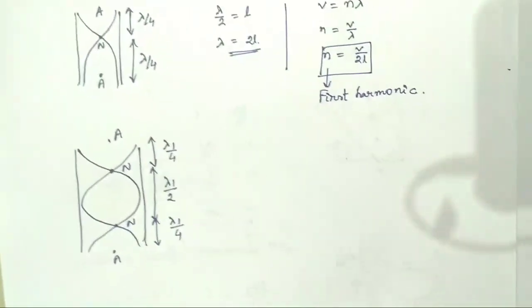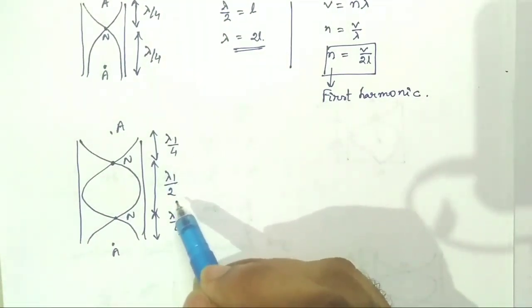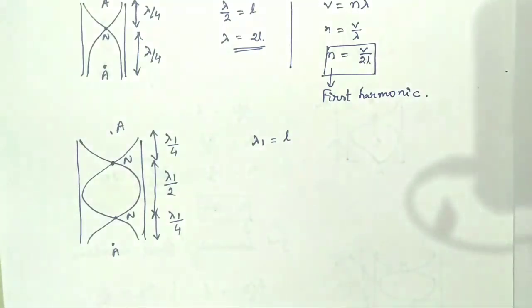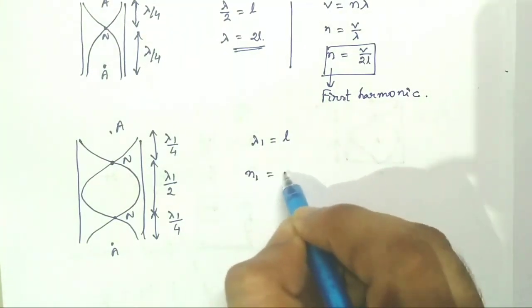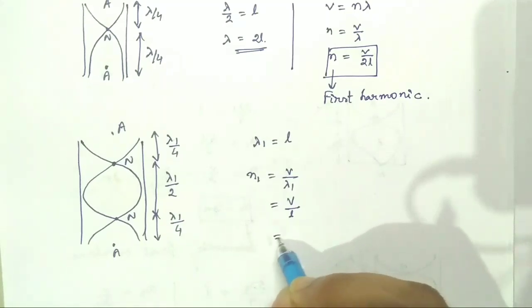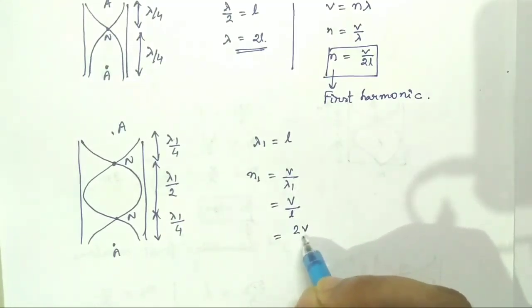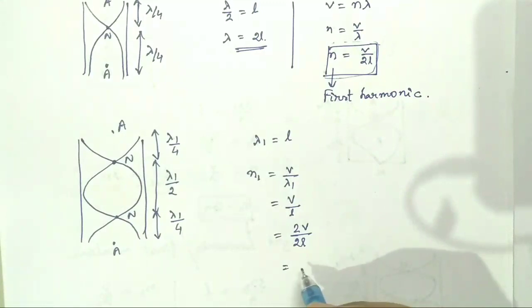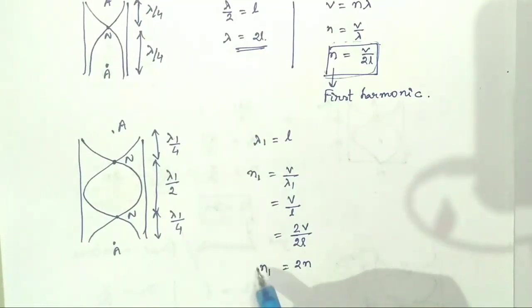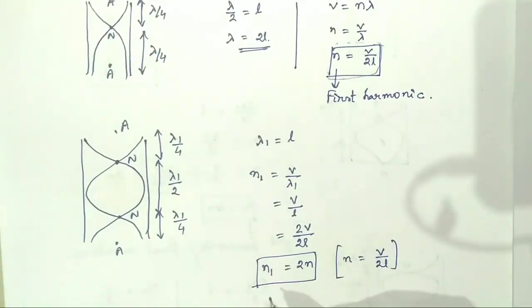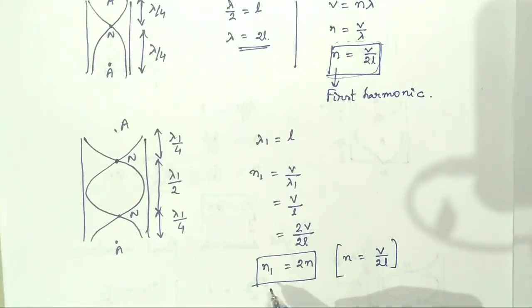For the second mode, the total distance is lambda 1 by 4 plus lambda 1 by 2 plus lambda 1 by 4, that is lambda 1 equals L. So N1 equals V by lambda 1, or V by L. Multiplying numerator and denominator by 2, we get 2V by 2L. Comparing with the fundamental frequency N equals V by 2L, we can write N1 equal to 2N. This frequency is called the second harmonic or first overtone.